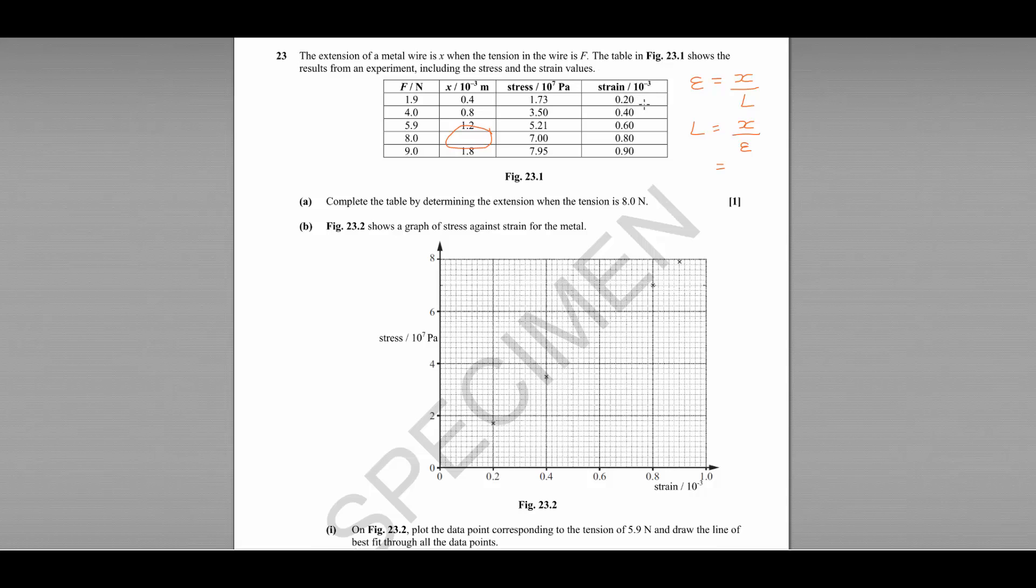So let's pick a value here. For the first one here, the extension is 0.4 times 10 to the minus 3, and the strain is 0.2 times 10 to the minus 3, which gives us an initial length of 2 meters.